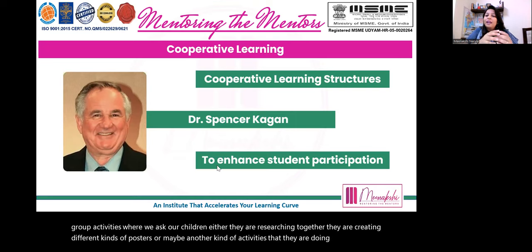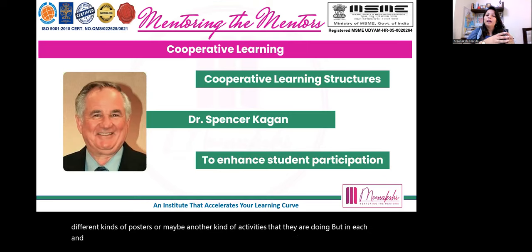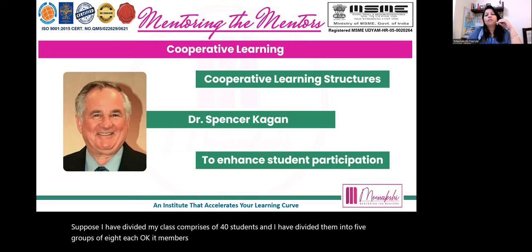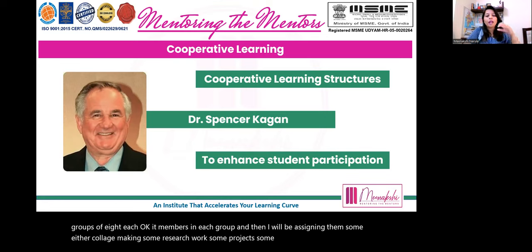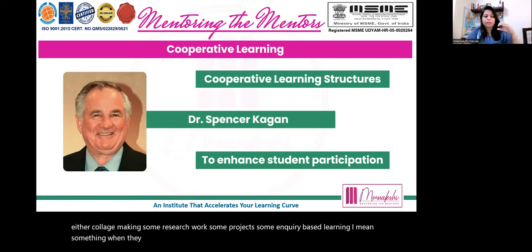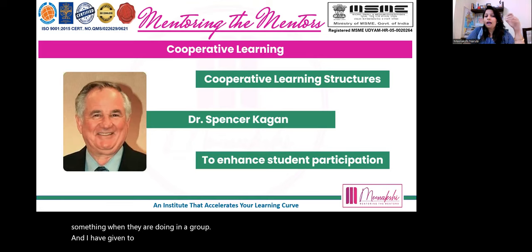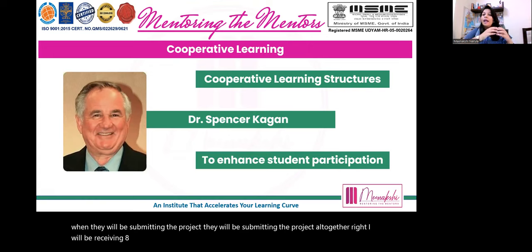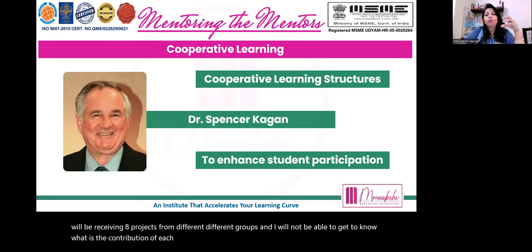Suppose my class comprises 40 students divided into five groups of eight each. I assign them collage making, research work, projects, or inquiry-based learning. When they are doing this in a group and submitting the project together, I will receive five projects from different groups. But I will not be able to know what is the contribution of each and every individual in that project. That is a collaborative task.